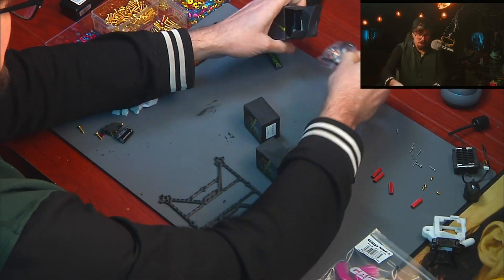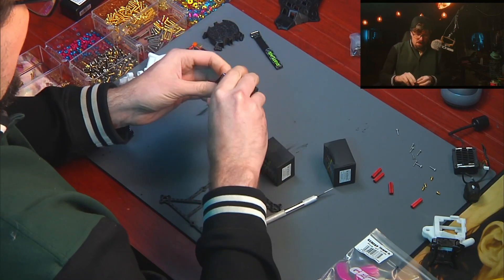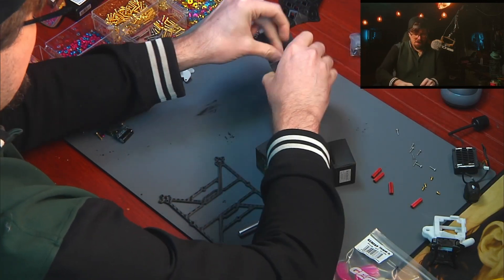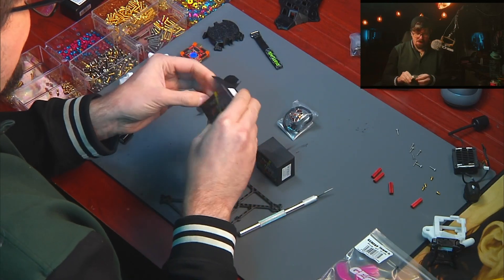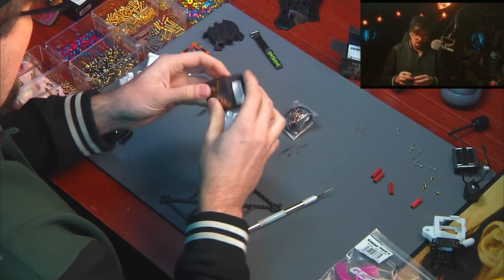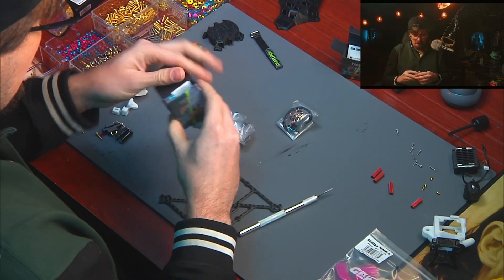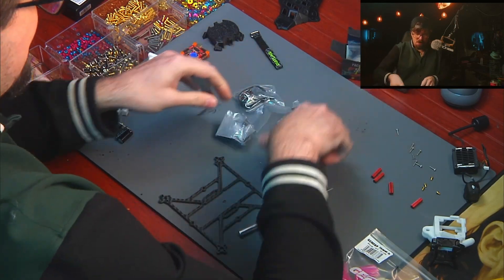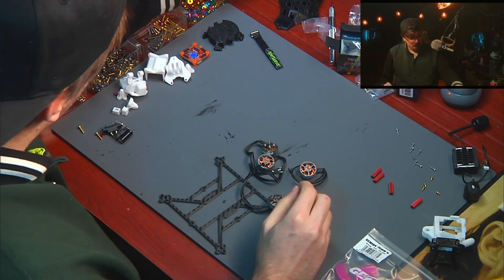Now, the motors come with a bunch of stuff that you almost always won't need whenever you're doing a custom build. If you're building something pretty standard, it seems like the manufacturers included the screw lengths and stuff inside these little boxes for those standard builds. You're going to grab these bad boys. Get your seven millimeter screws.